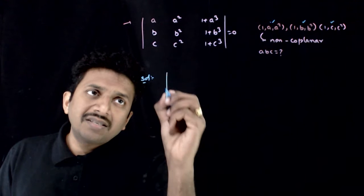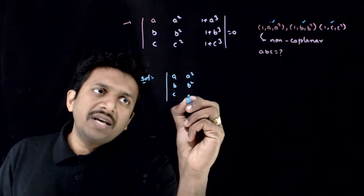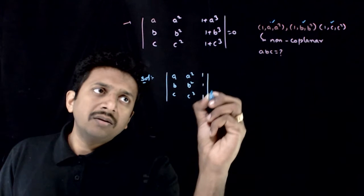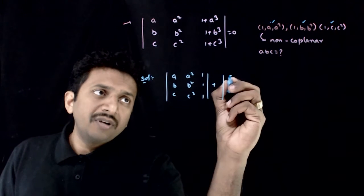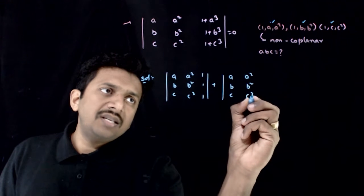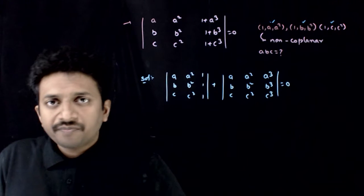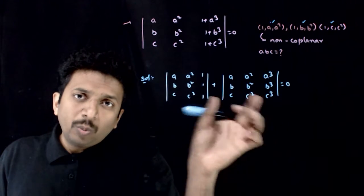That is, this determinant can be written as determinant of A, B, C, A square, B square, C square, 1, 1, 1 plus determinant of A, B, C, A square, B square, C square, A cube, B cube, C cube is equal to 0. So, this determinant can be split into two parts.